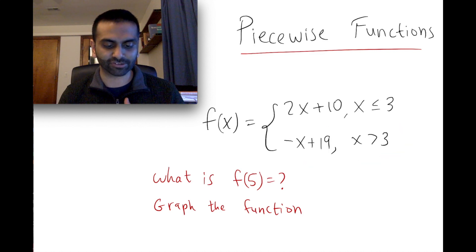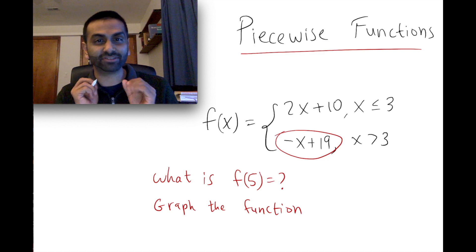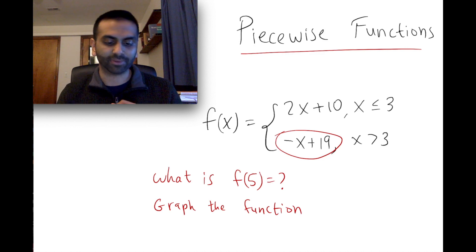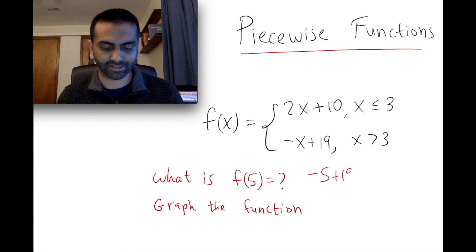So really f of 5 is just whatever the second function outputs, not what this first one does. So here to answer the question what is f of 5, just plug in 5 over here so you get negative 5 plus 19. So that would be 14.